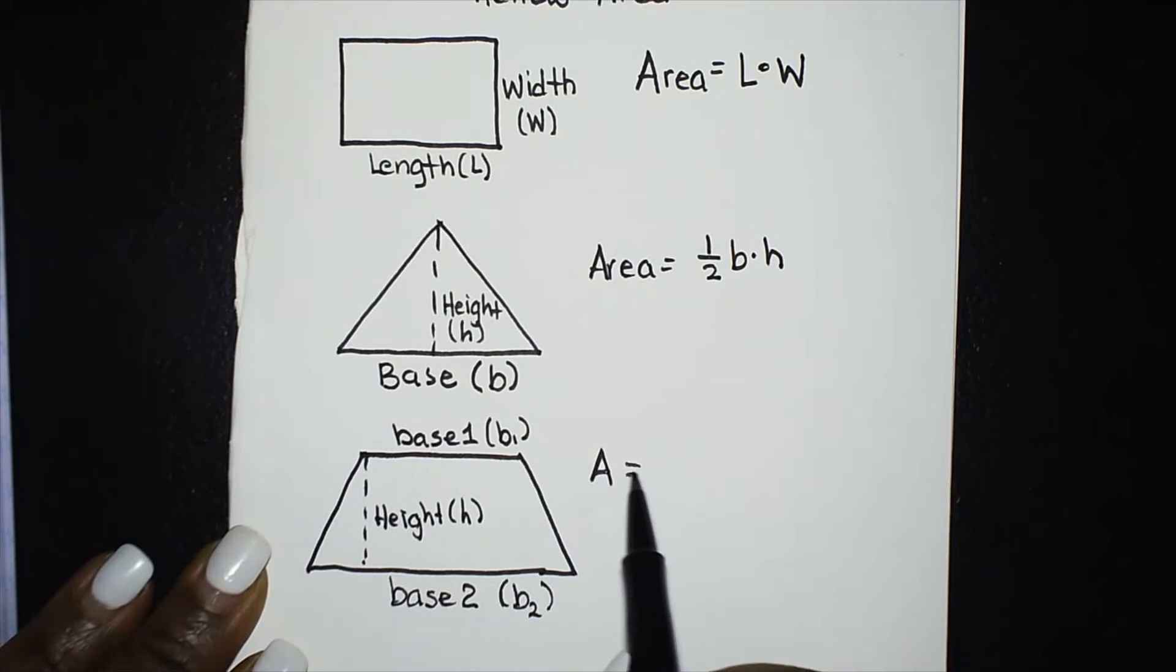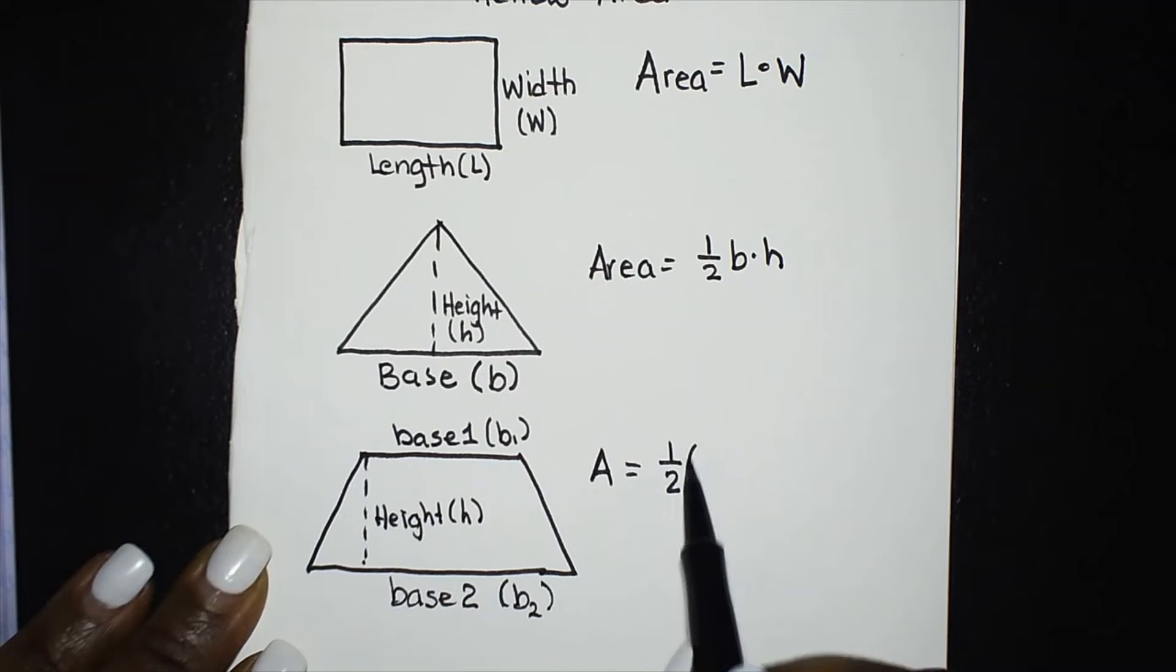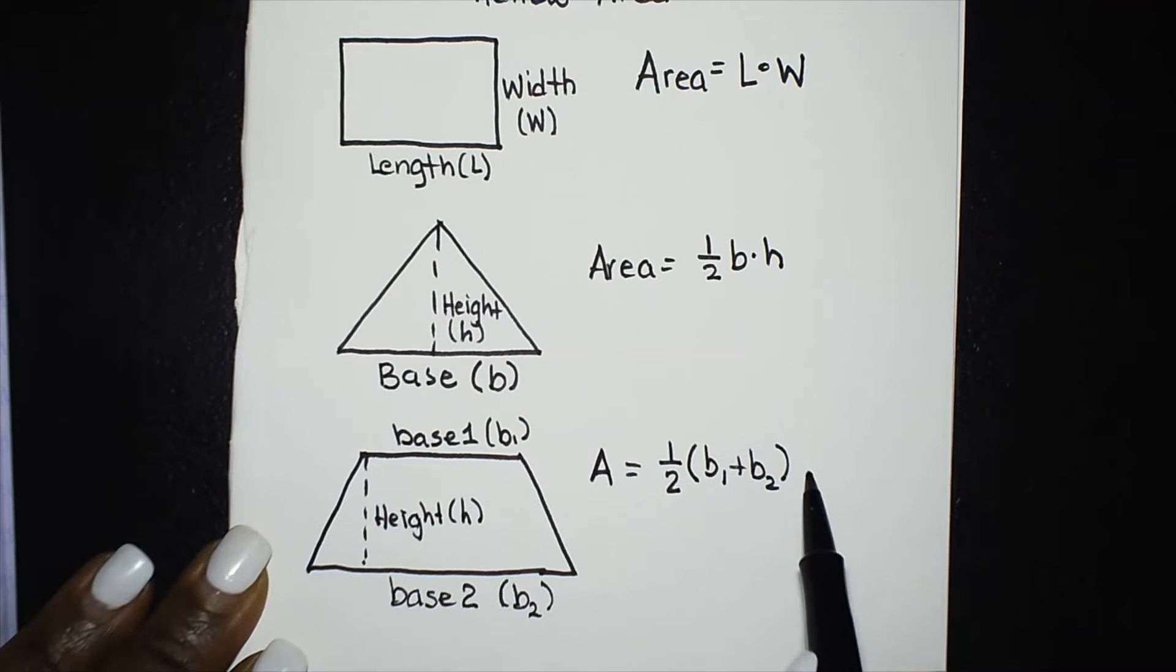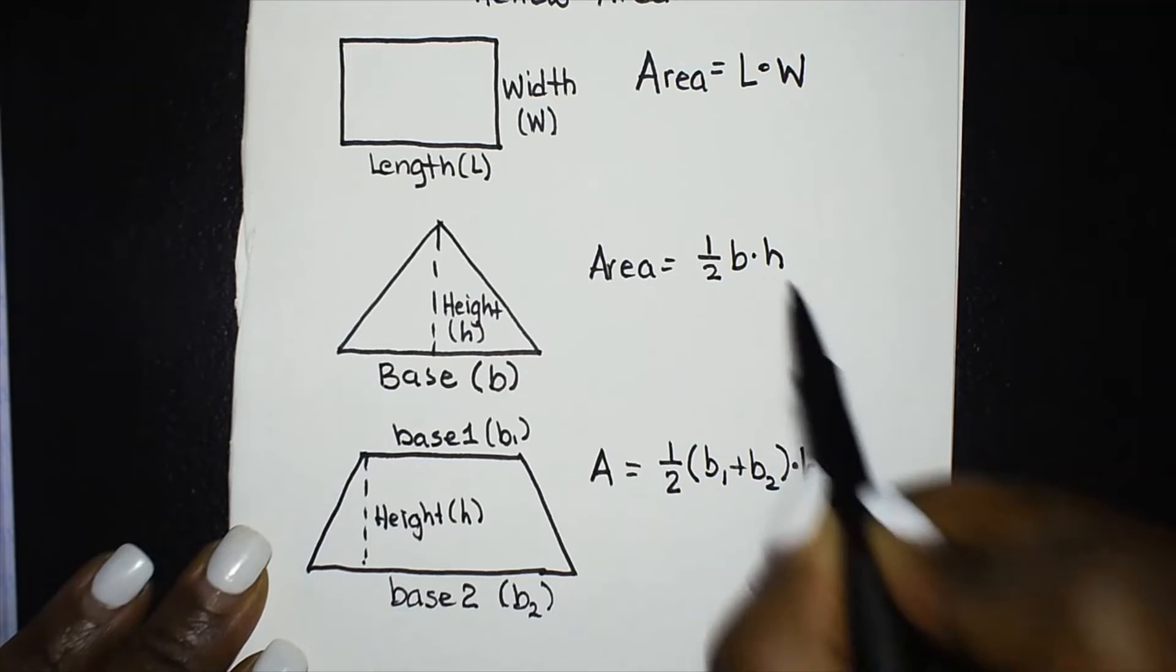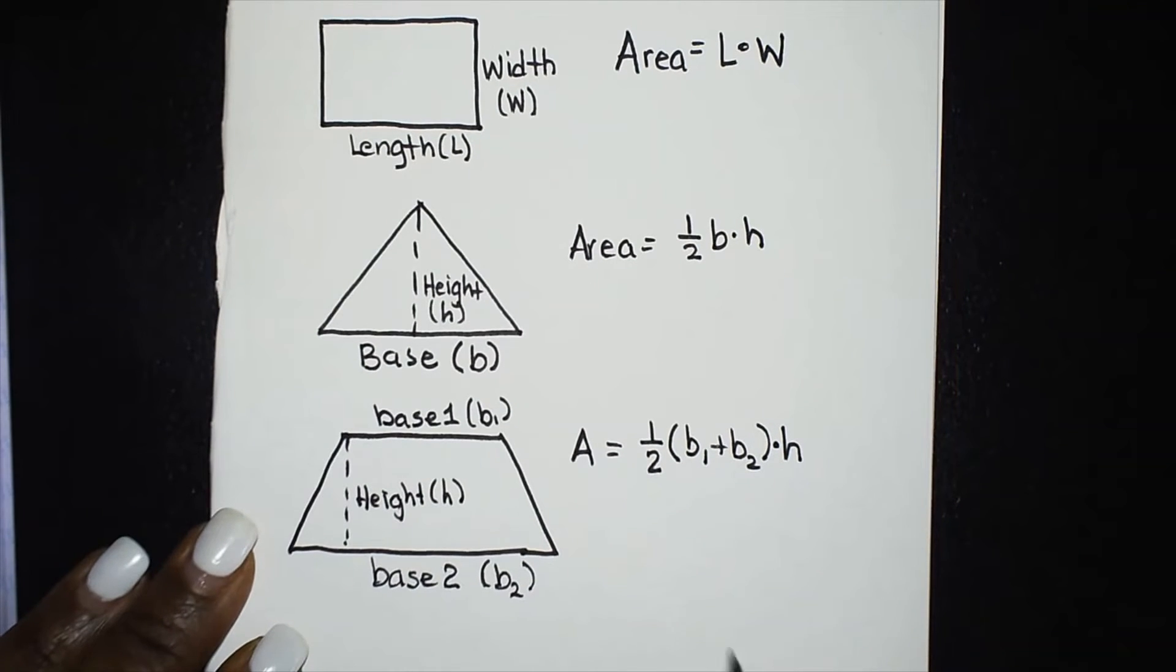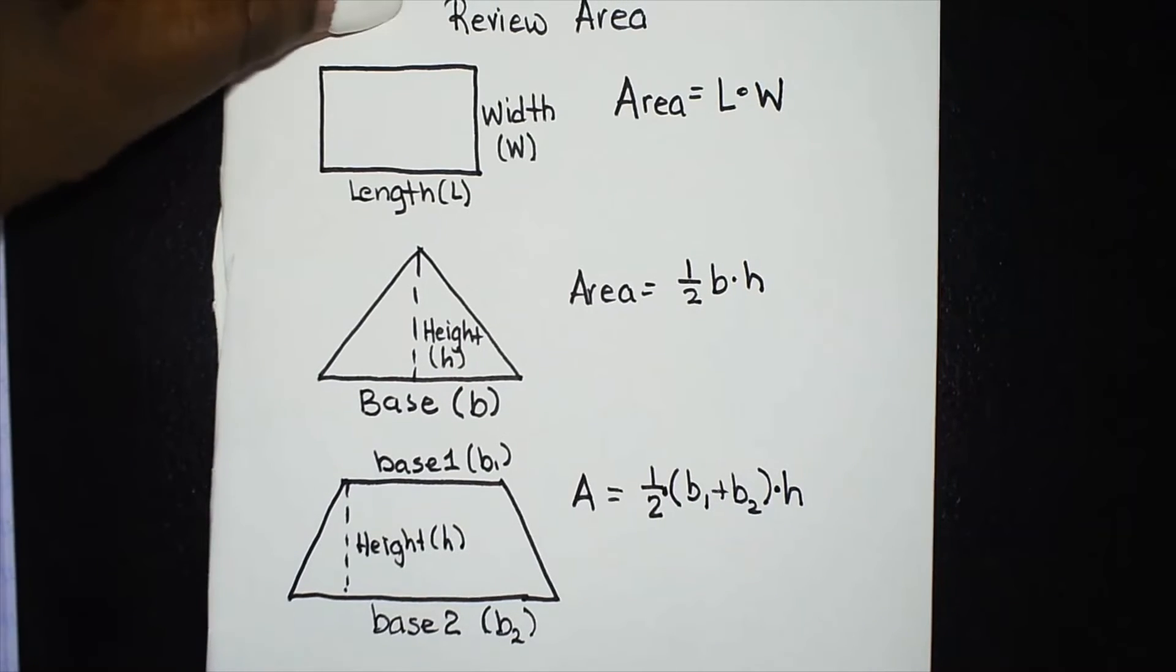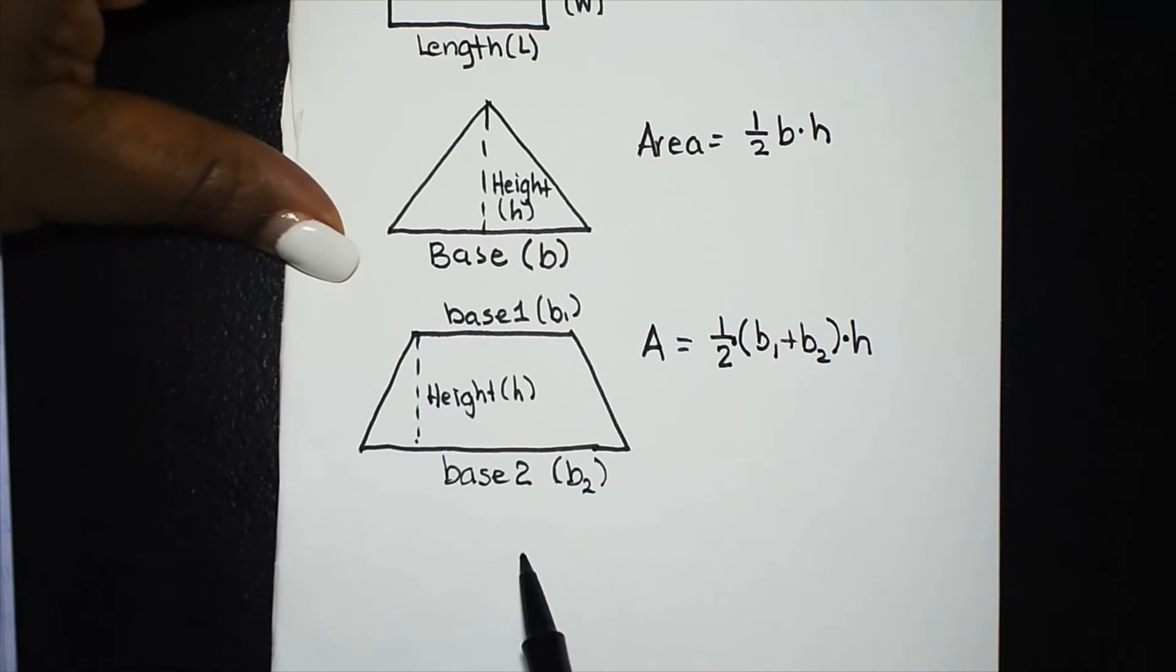So the area of the trapezoid is one half the sum of B1 plus B2 times the height. All of that is being multiplied by each other. If you have letters and numbers right next to each other it automatically is that they're being multiplied. This quantity in parentheses you add it first then you want to multiply it. So these are some basic shapes, the last shape.